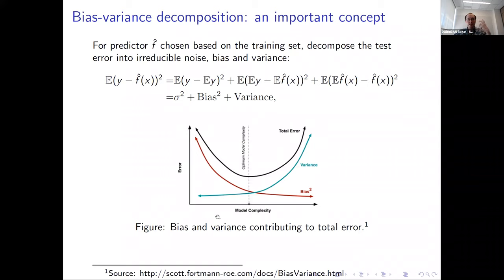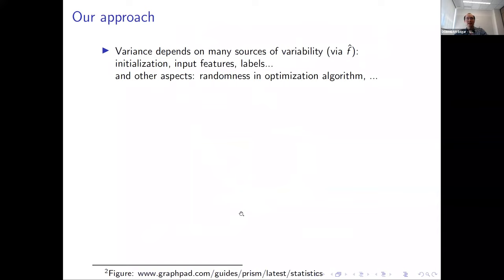Usually what we think about is we want to strike the right balance, as shown in this picture, where we want to find a model that's not too large so it doesn't have too much variance, but large enough that it has small bias. Neural networks, partly the interest in them is because somehow they experimentally have a very good trade-off in bias and variance. There's been a lot of work in the direction of double descent, which I'll talk about a little later, but our perspective is a different one.